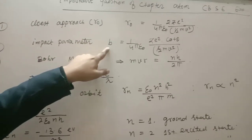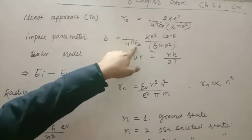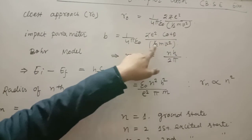Impact parameter B = 1 by 4π epsilon naught, z e square, cot theta, half mv square.